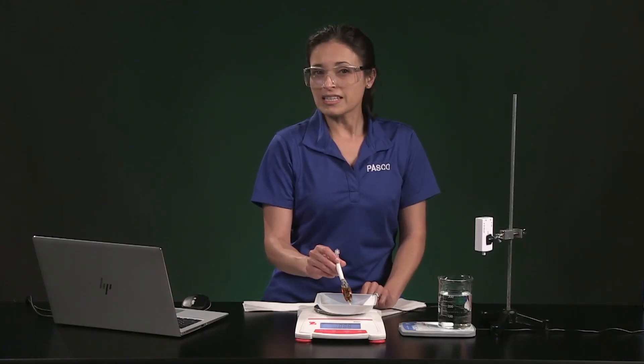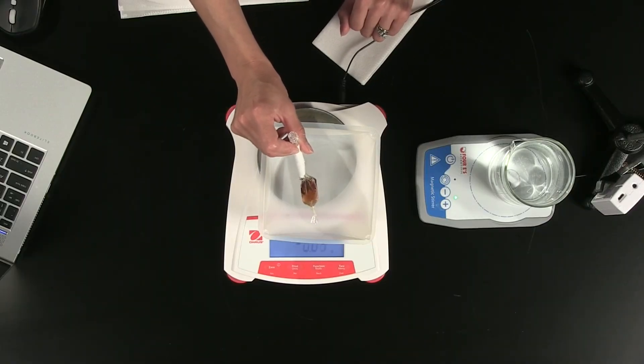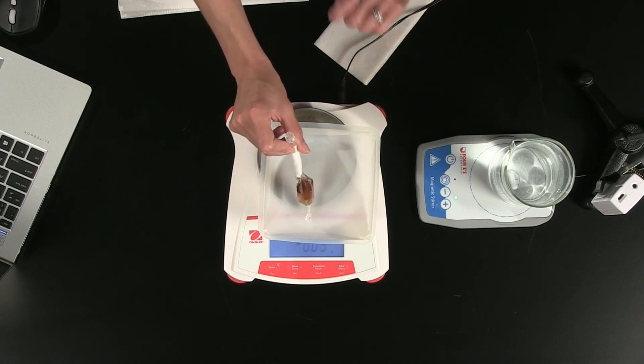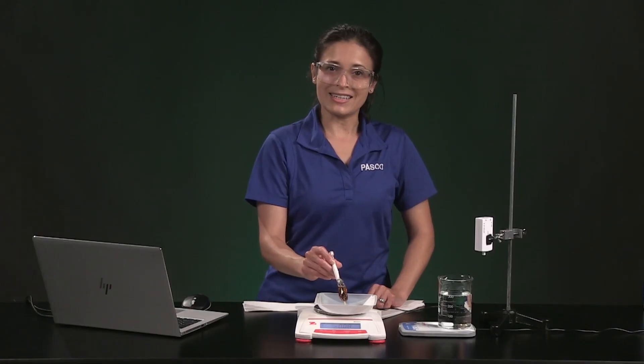We can also make qualitative observations of the bag and beaker contents before and after the bag is placed in the water. Right now the water is clear and the contents of the bag look like ordinary pancake syrup. Now we are ready to start collecting data.